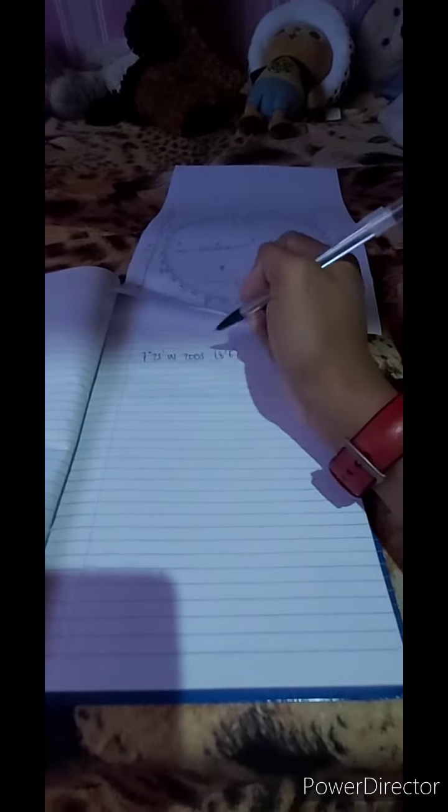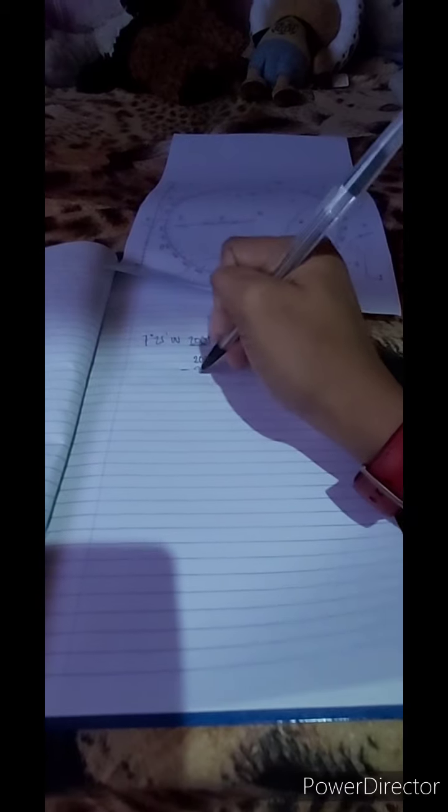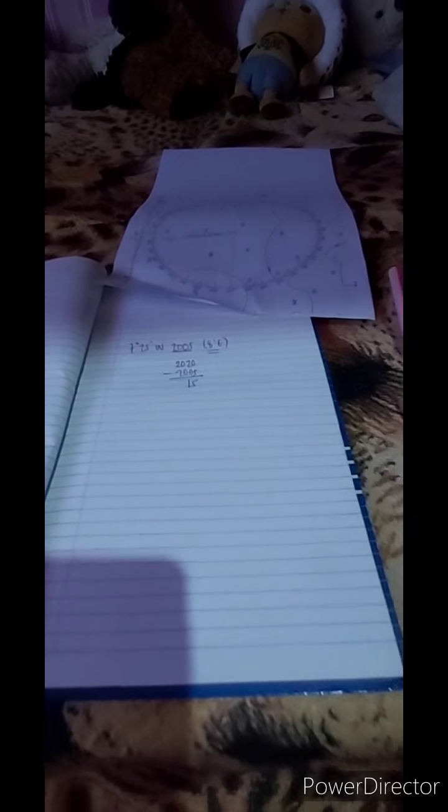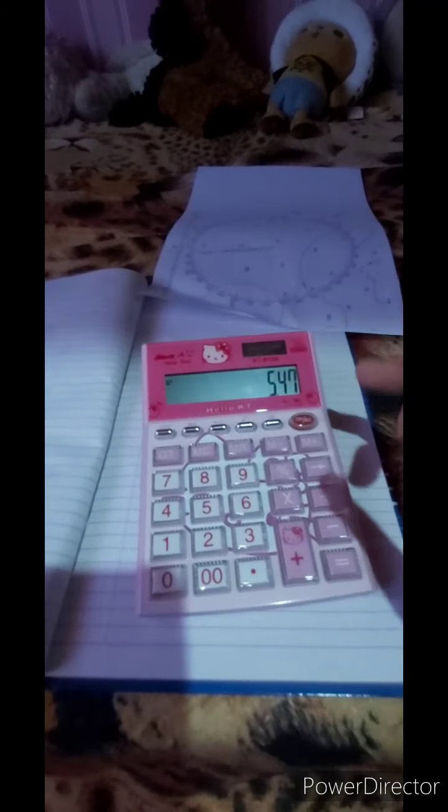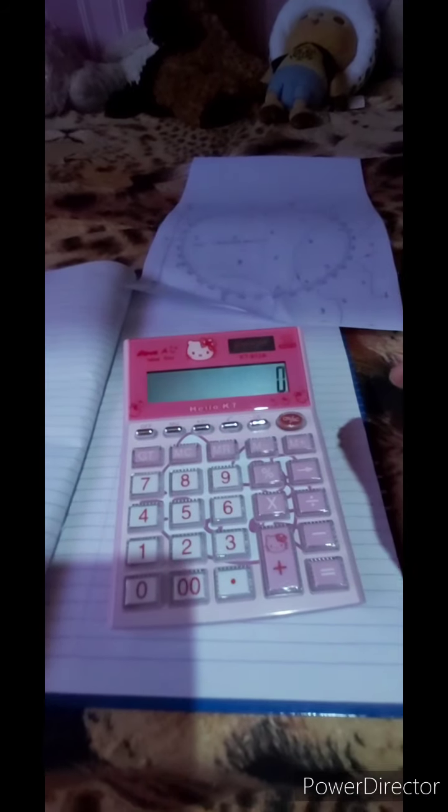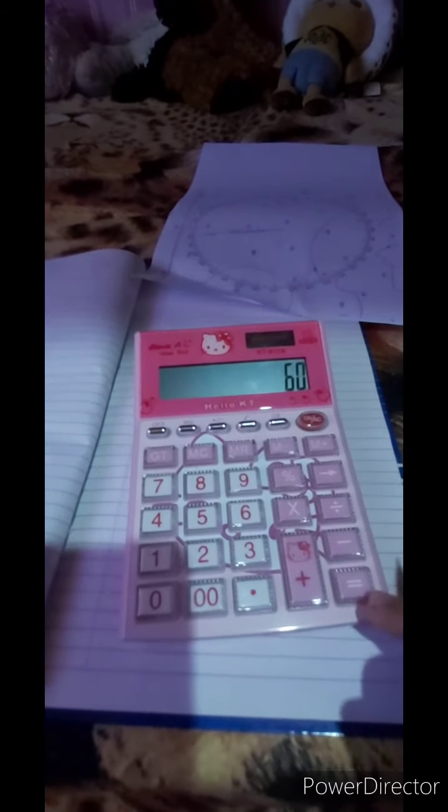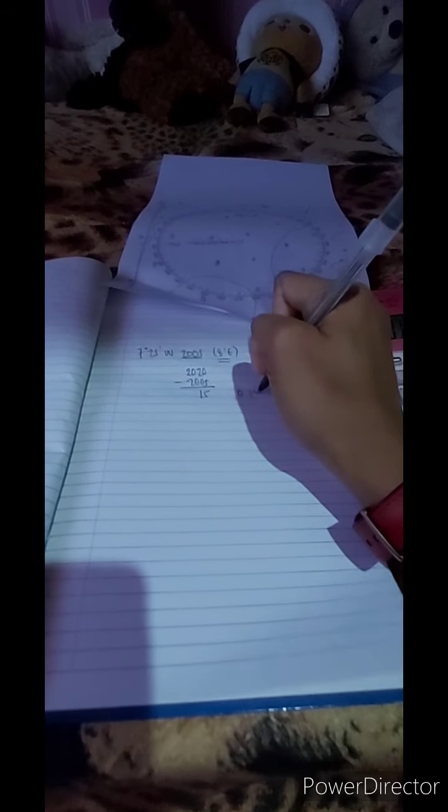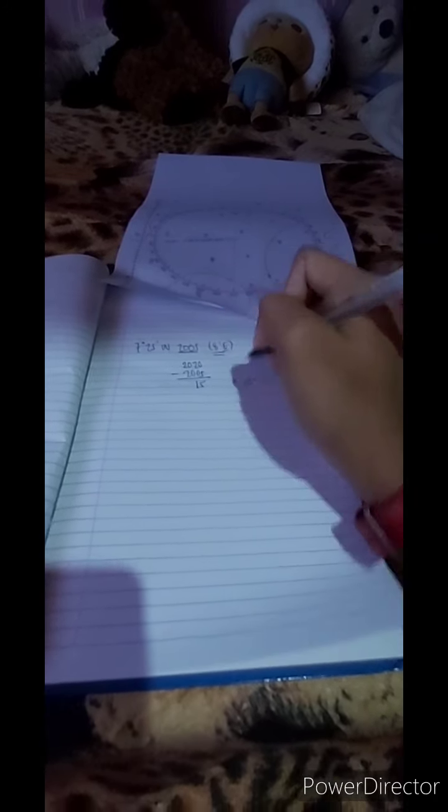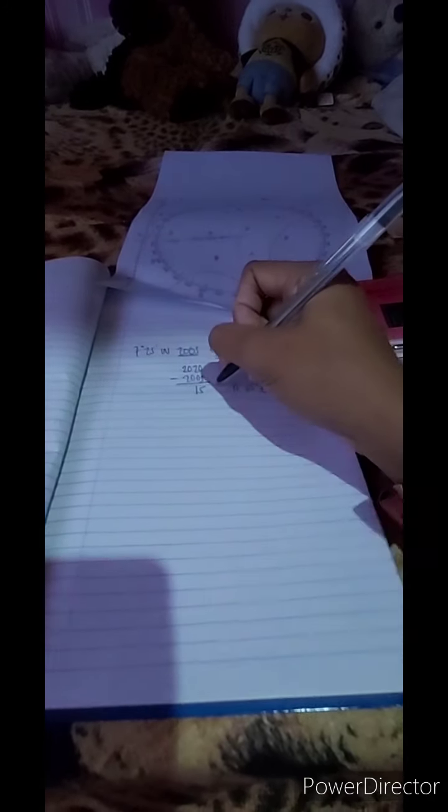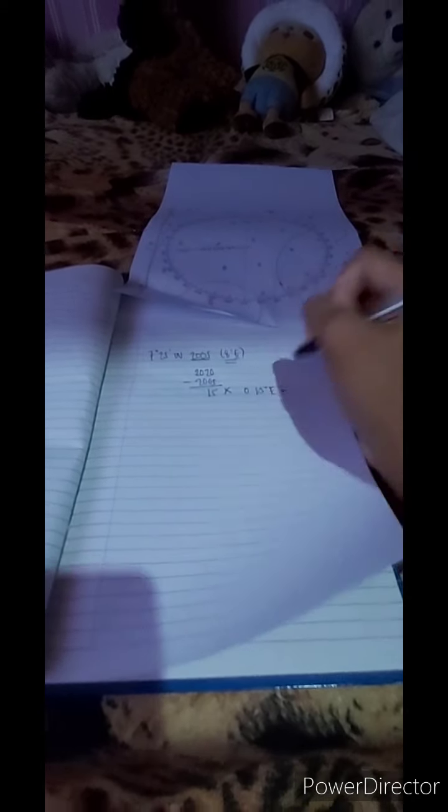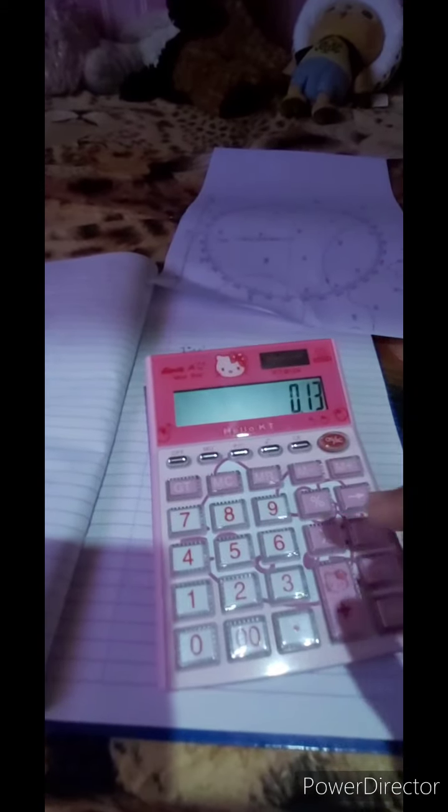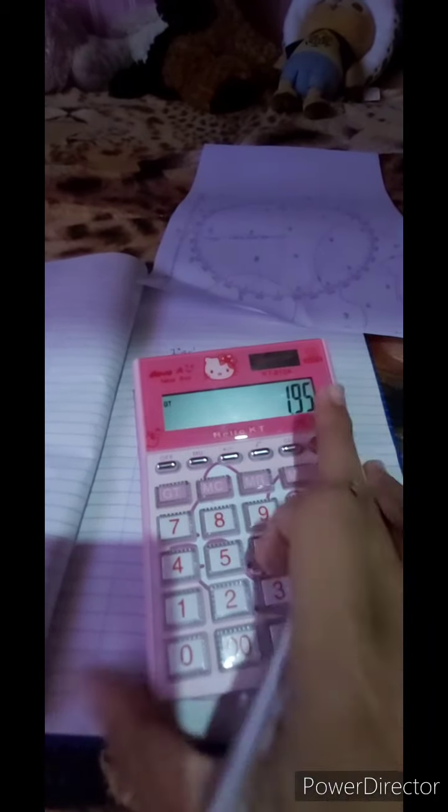The first thing to do is subtract 2005 from the present year. Our present year is 2020 minus 2005, which is 15. The 8 minutes is the annual change of variation. Convert it into degrees. In 1 degree, there are 60 minutes, so 8 divided by 60 equals 0.13 degrees east. Then multiply it by 15: 0.13 times 15 equals 1.95, 1.95 degrees east.